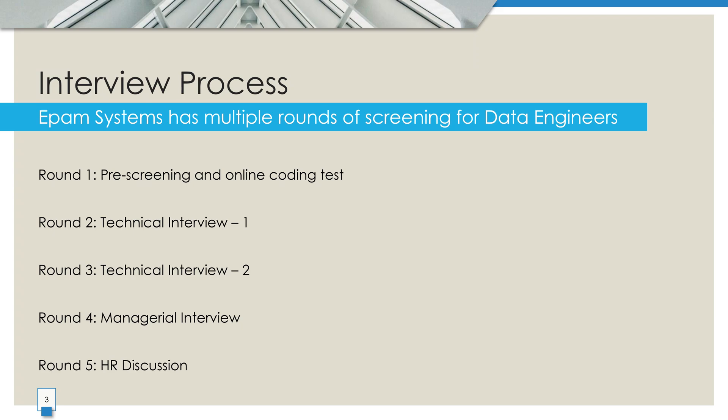Next comes the managerial interview. This round is also about 1.5 hours, but the focus is different. Instead of going deep into technical questions, this is more about checking your fit for the organization — how you work in a team, how you approach problem-solving, and how well you align with EPAM's culture and values. And finally, the HR discussion. This is the last step of the process where salary, benefits, and joining bonus negotiations take place. Once you reach this stage, it's usually about finalizing the offer.